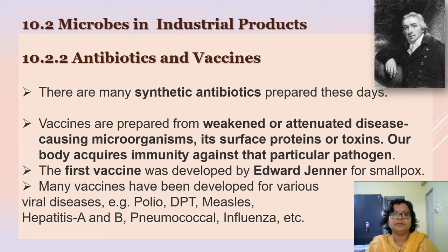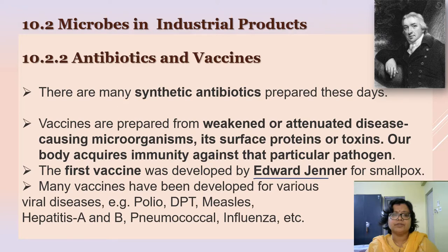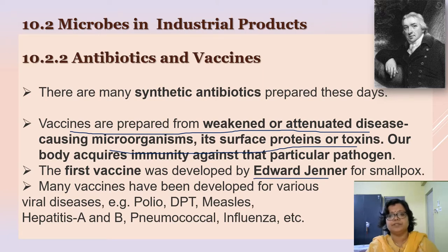The first vaccine was developed by Edward Jenner for smallpox. Many vaccines have since been developed for various viral diseases like polio, hepatitis A and B. Vaccines are prepared from weakened or attenuated disease-causing microorganisms, their surface proteins, or toxins that are no longer pathogenic but still provide immunity.